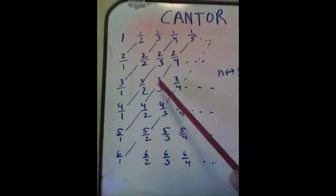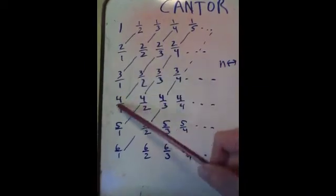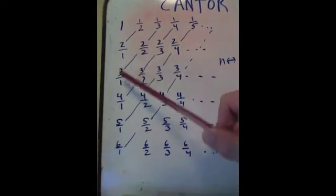3 over 1, 3 over 2, 3 over 3, 3 over 4, to infinity. And then all the way down 1, 2 over 1, 3 over 1, 4 over 1, 5 over 1, 6 over 1, to infinity.